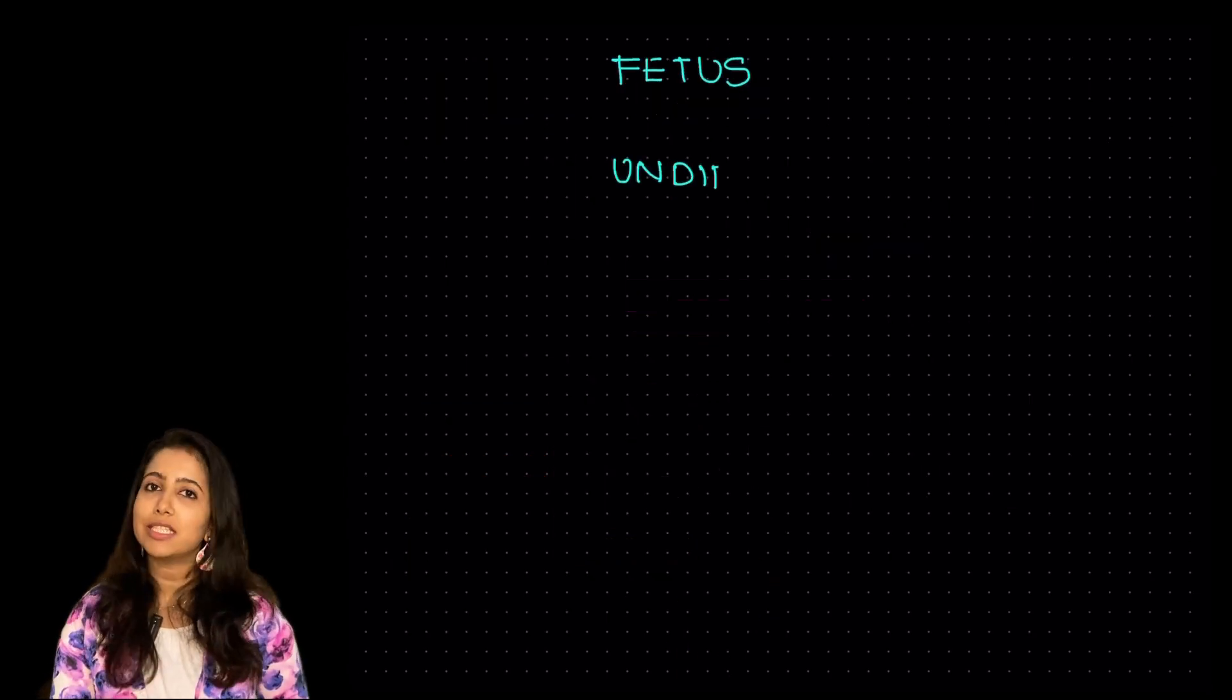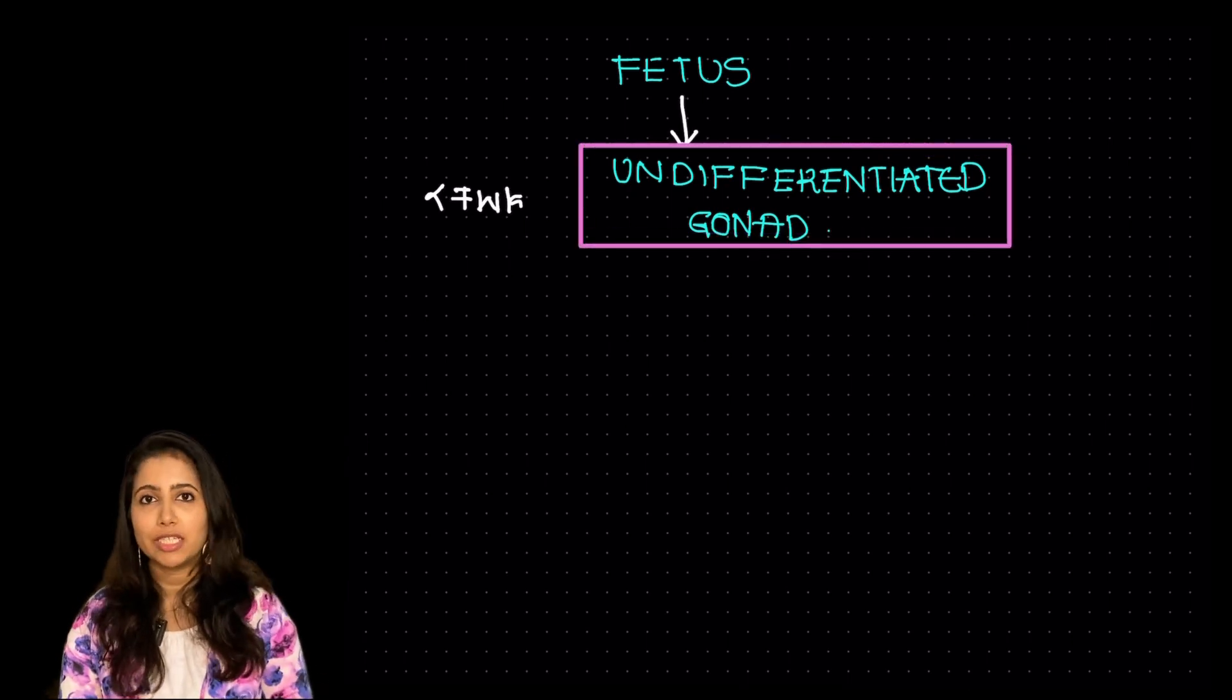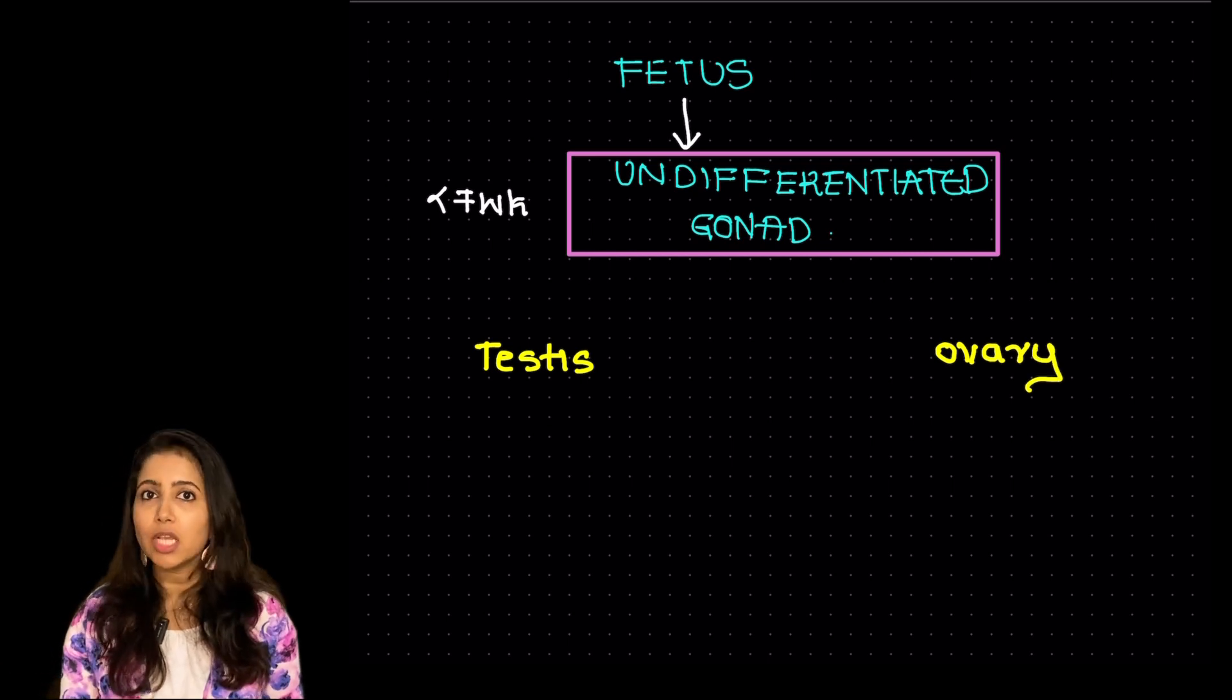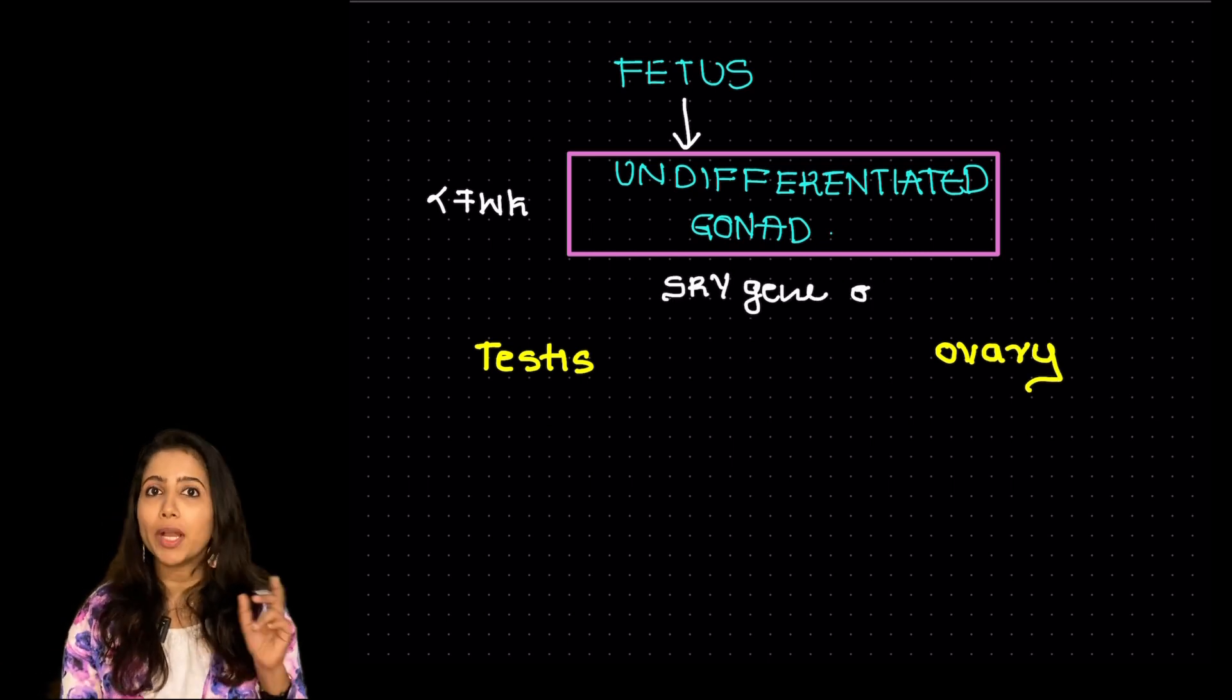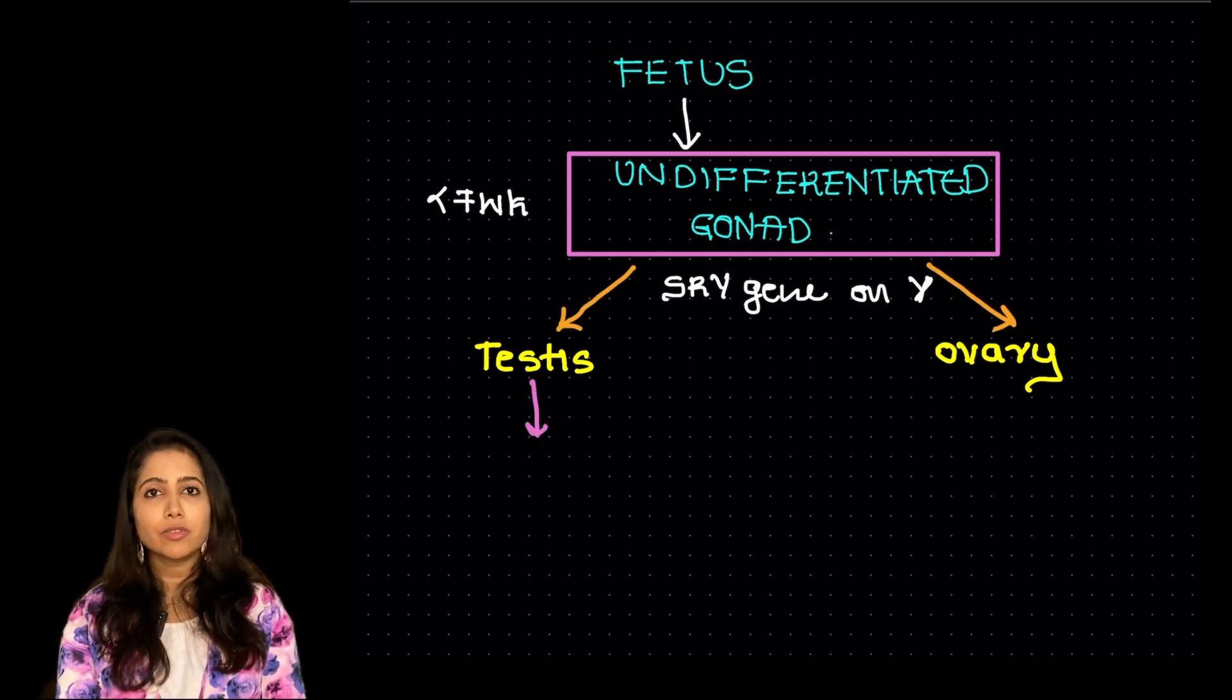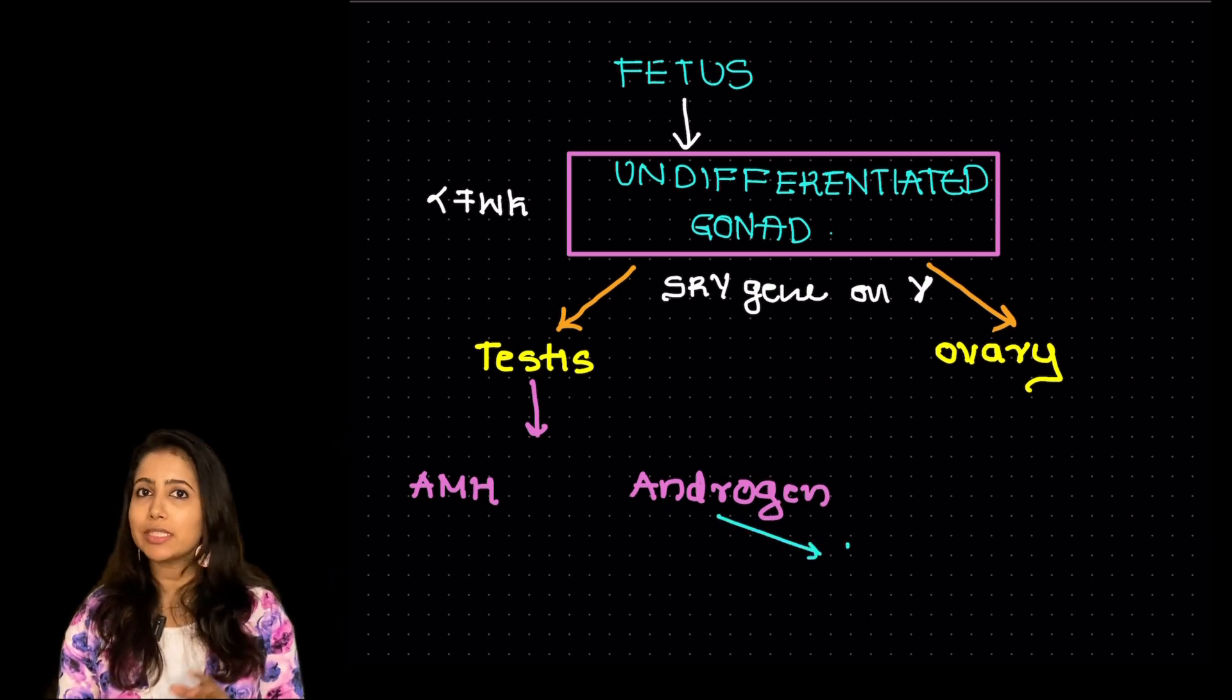The third thing is that in the fetus till 7 weeks the gonads are undifferentiated. That is they can develop either into testis or into ovaries which is determined by the Y chromosome. So if it is a Y chromosome the testis is going to develop and the testis will release AMH as well as androgen.